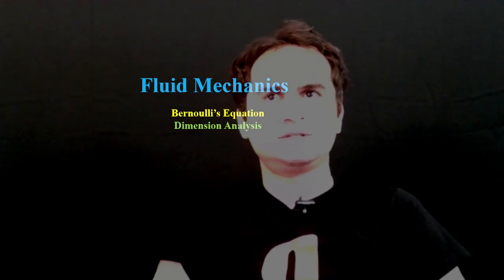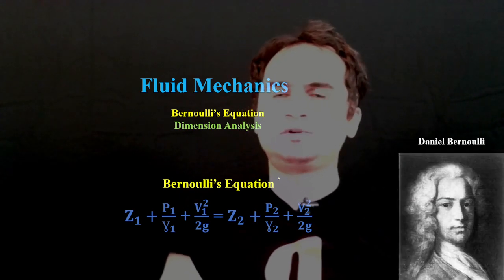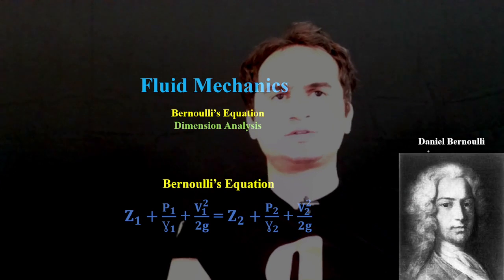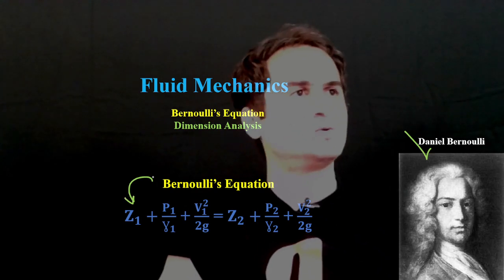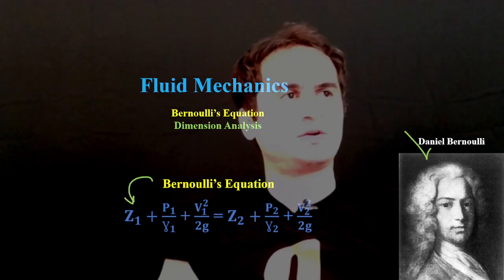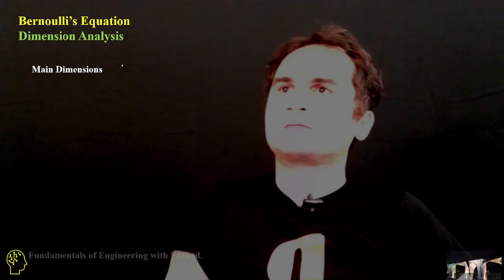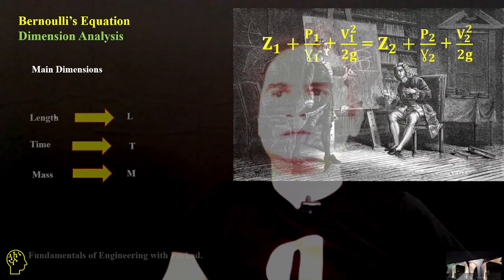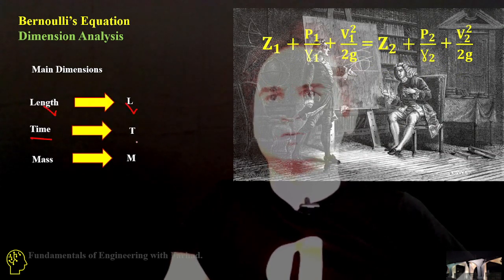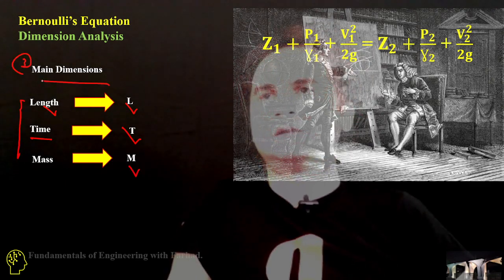In this video we want to talk about Bernoulli's equation and dimensional analysis. Bernoulli's equation was developed by a Swiss mathematician called Daniel Bernoulli and is one of the most dominant equations in fluid mechanics and hydraulic engineering. The three main dimensions are length (L), time (T), and mass (M).